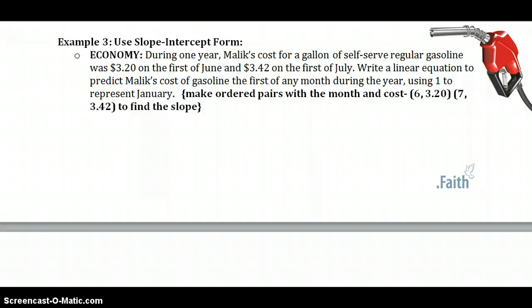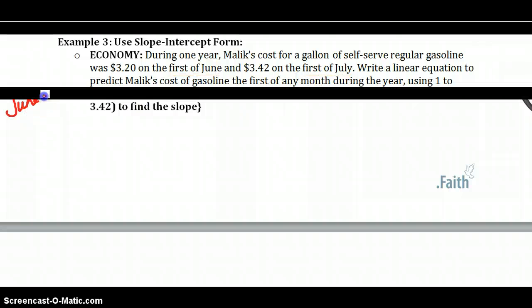Economy. During one year, Malik's cost for gas for a gallon of self-serve regular gasoline was $3.20 on the 1st of June. Then it went up to $3.42 on the 1st of July. Write a linear equation to predict Malik's cost of gas the first of any month during the year, using 1 to represent January. So if 1 is January, what is June? June would be the 6th month. And what is July? July would be the 7th month.